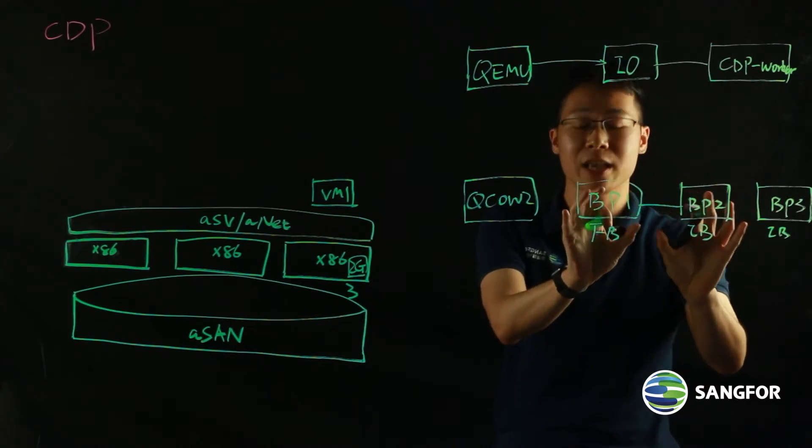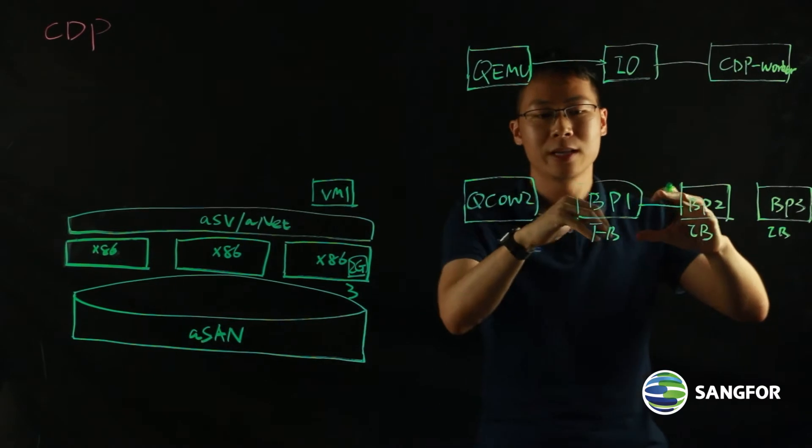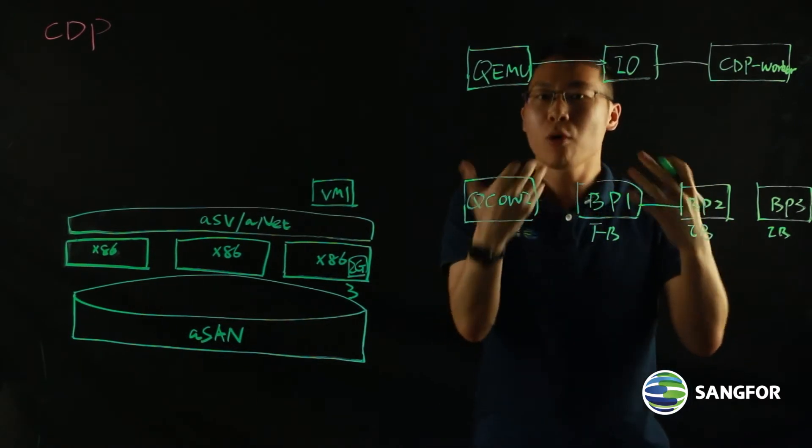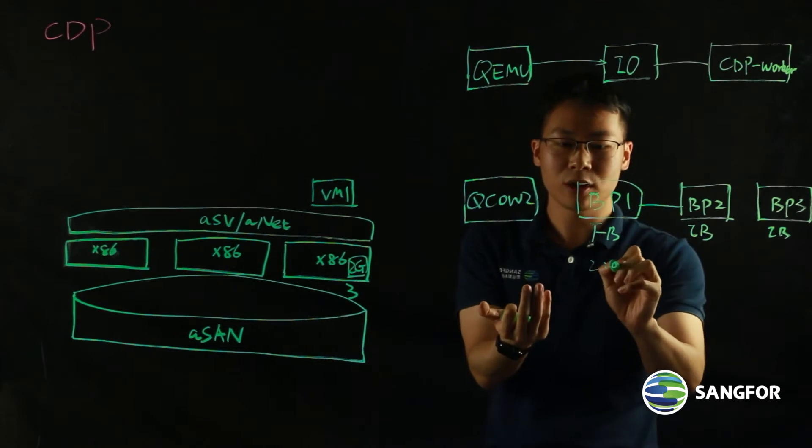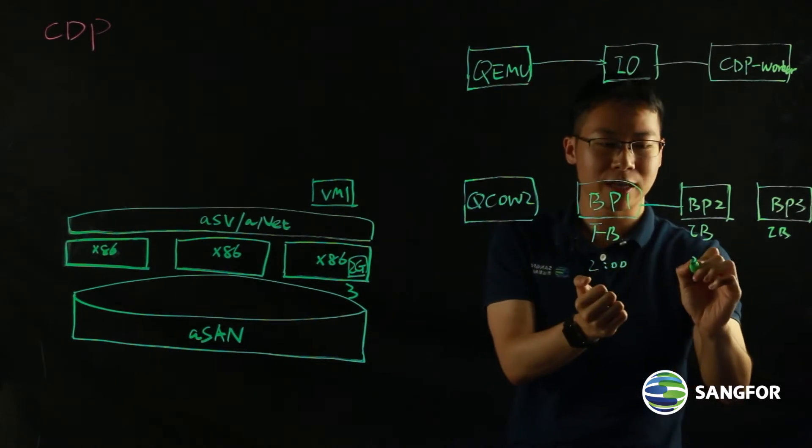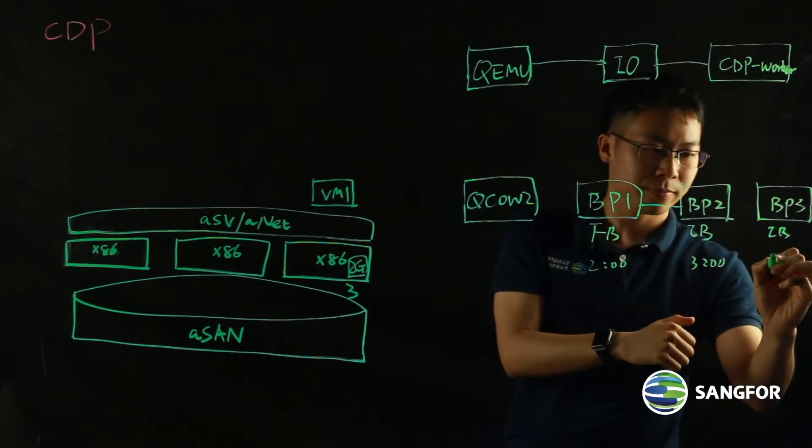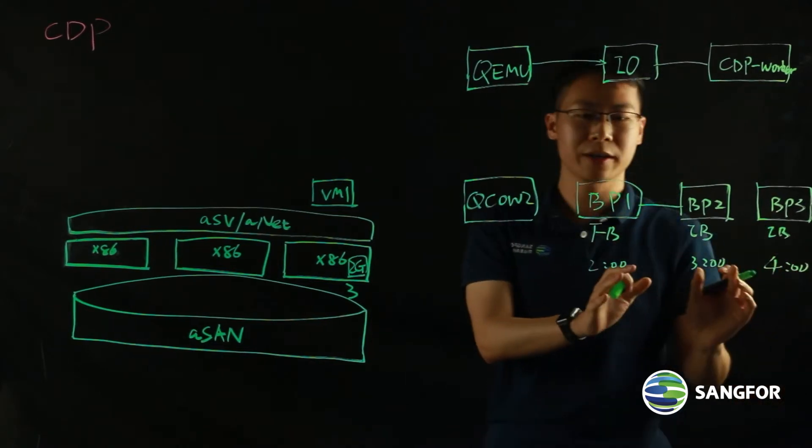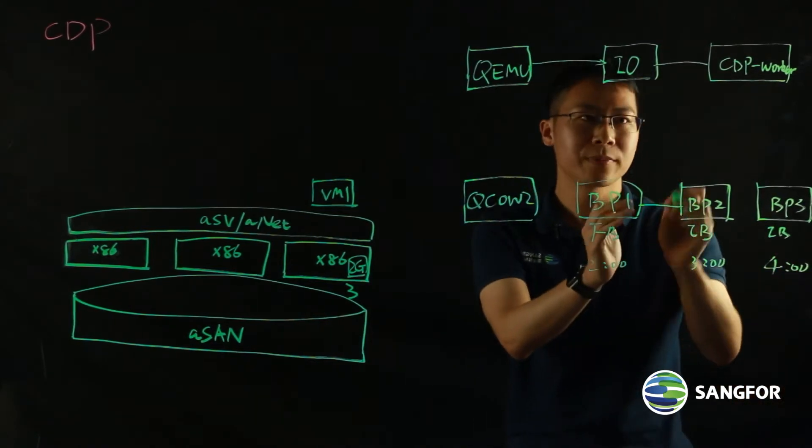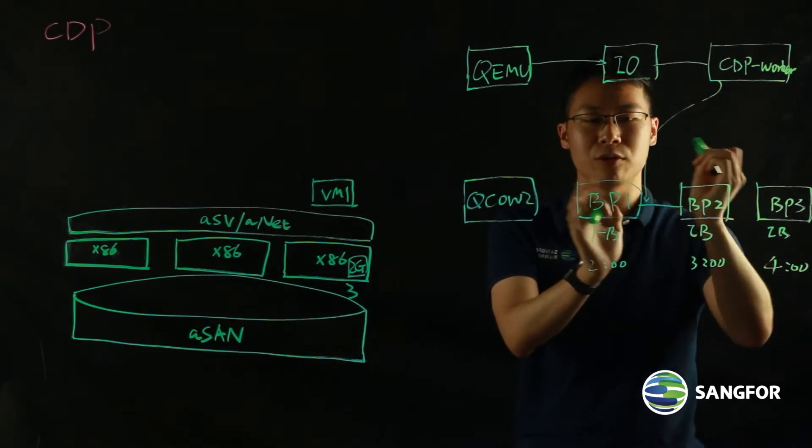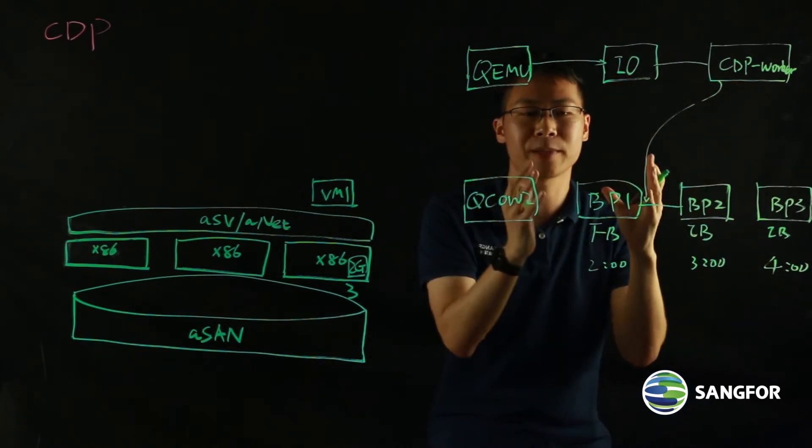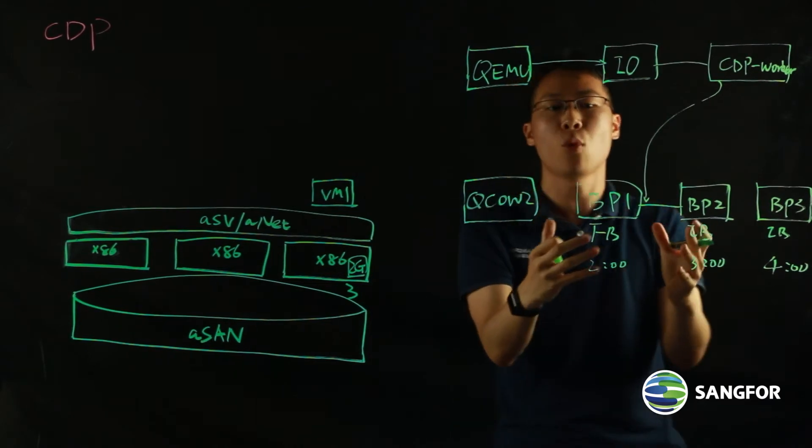It will put a timestamp to the IO log and then distribute it between the backup points. So between the backup points, let's say if I enable an hourly backup in the CDP policy. That means maybe here is two o'clock. At this point of time is three o'clock. Here is four o'clock. Between this one hour,